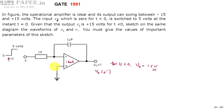Since the op-amp is ideal, no internal currents flow. Current flowing through inverting and non-inverting terminals are zero, and voltage across inverting and non-inverting terminals are going to be the same. That is what we call virtual short. Virtual short means the voltage across both terminals of the op-amp will be same. Since the non-inverting terminal is at ground, the inverting terminal is also at 0 volts.